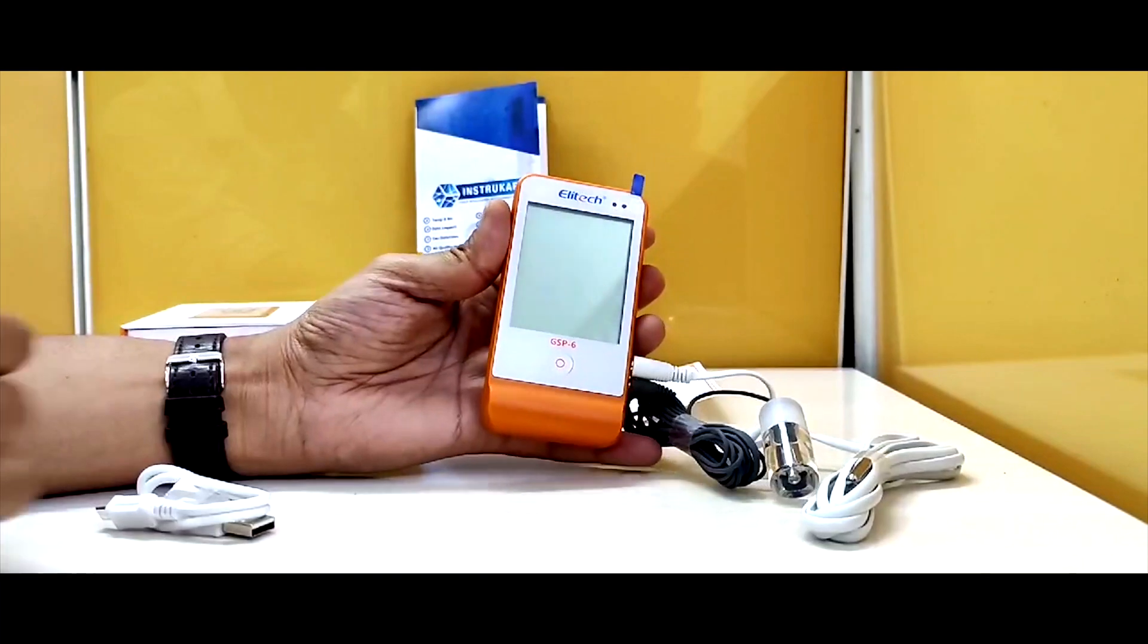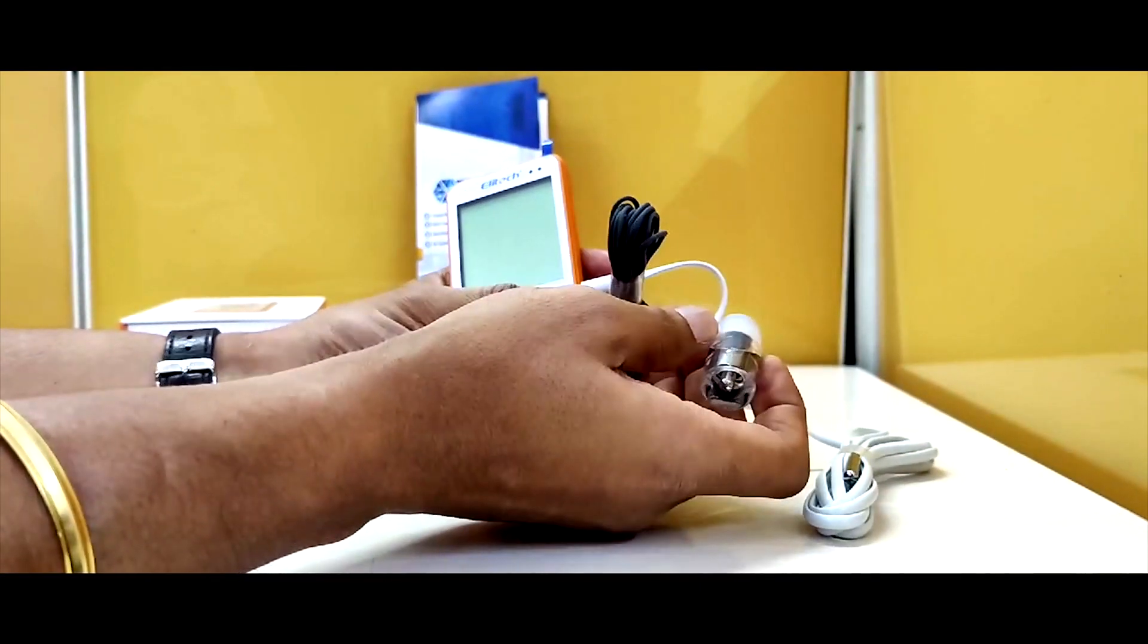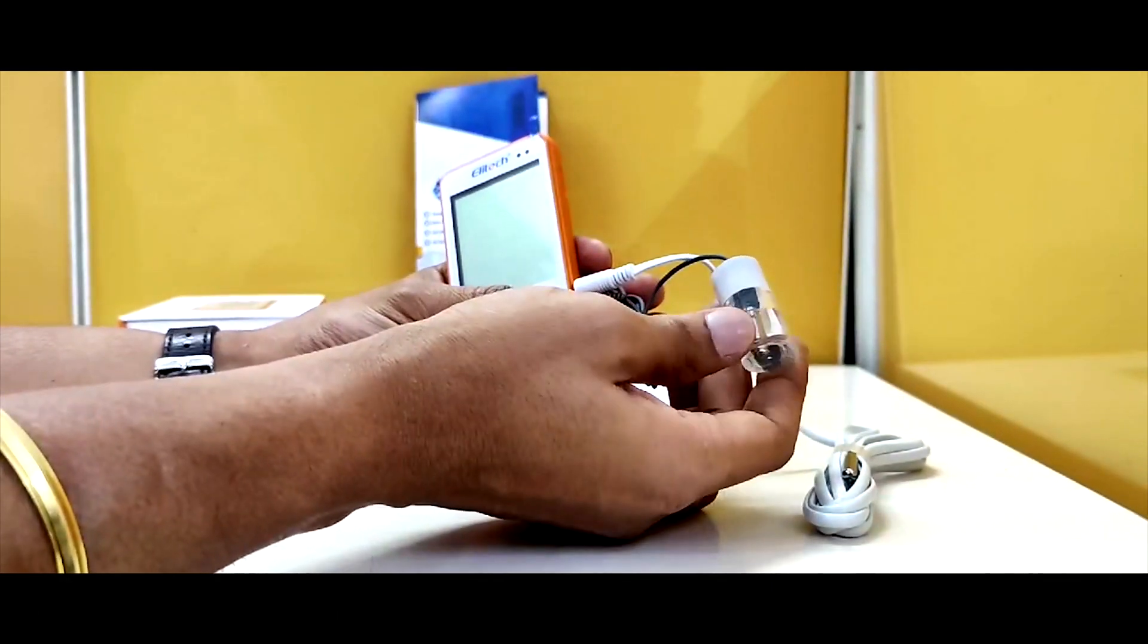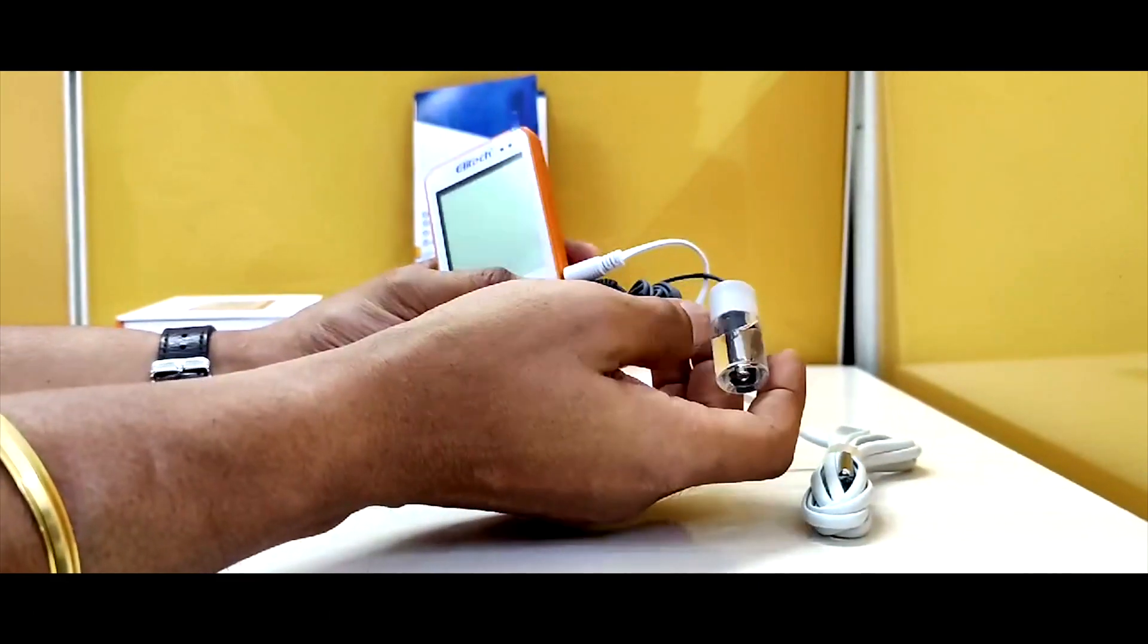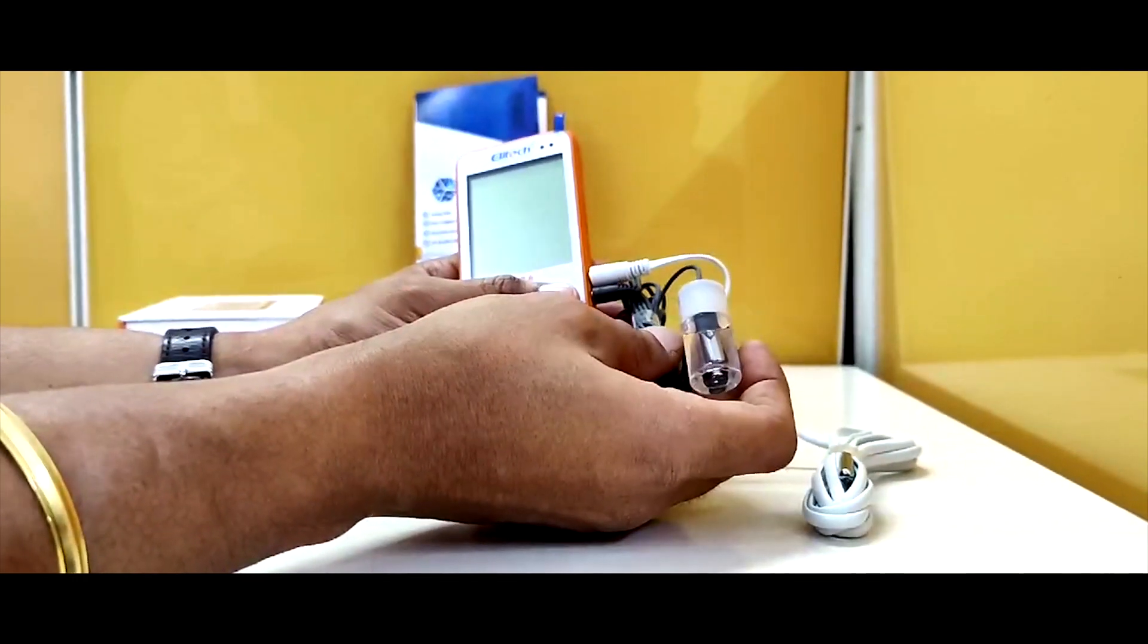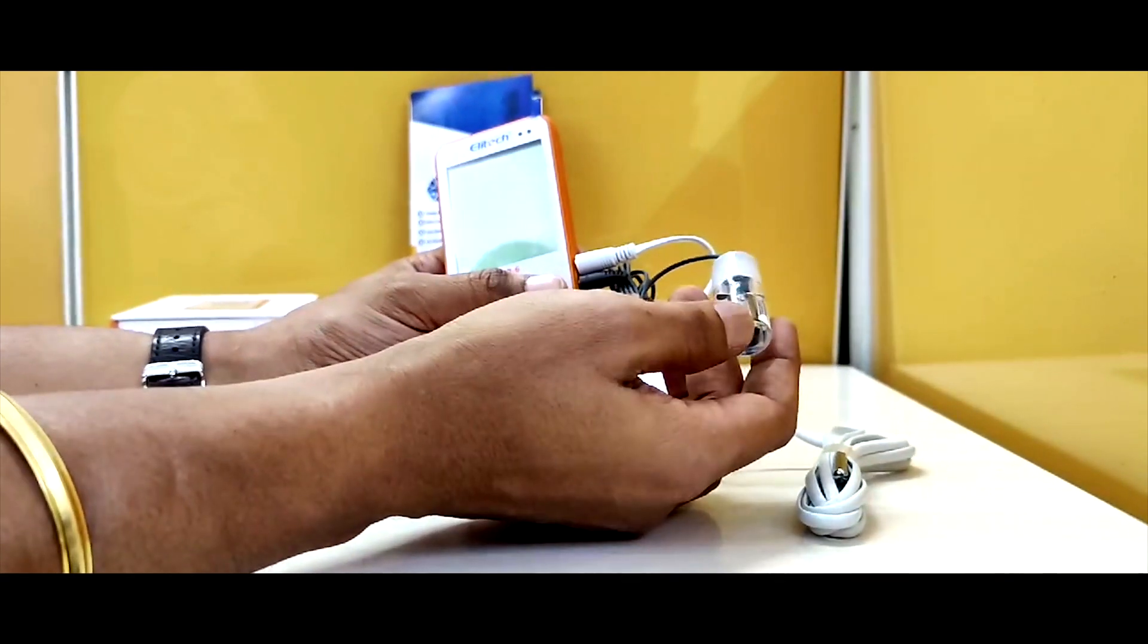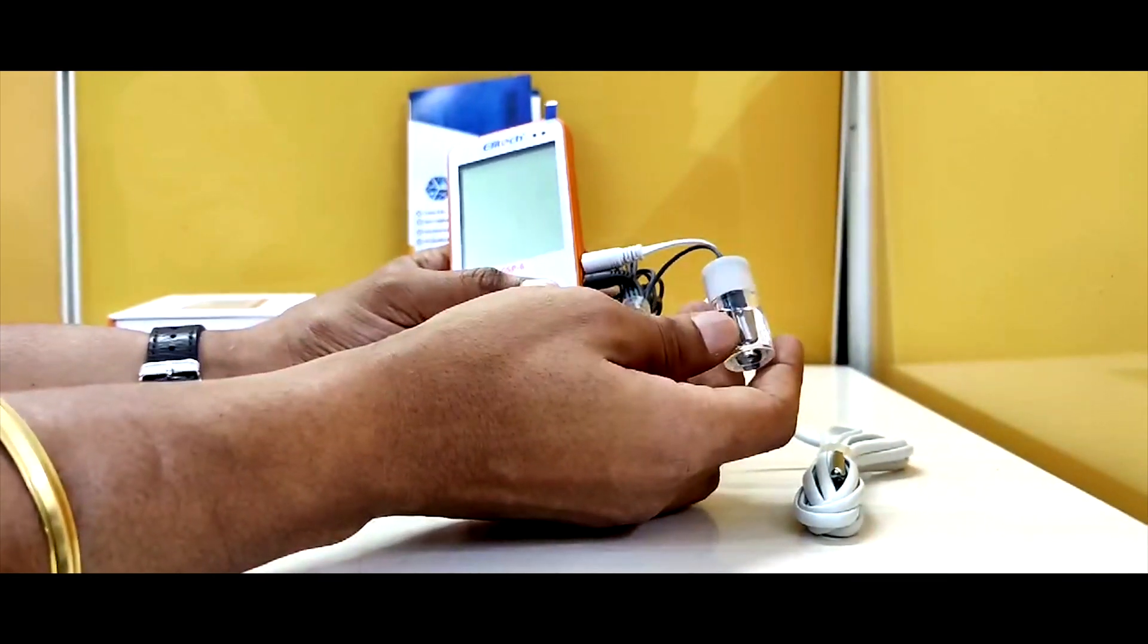Now the basic difference between 6 and 6G is this temperature probe. The 6G comes with a glycol bottle. This glycol bottle is basically used at certain applications where we have to check the vaccines or used in vaccine control, so that it simulates the same kind of temperature, same kind of environment.